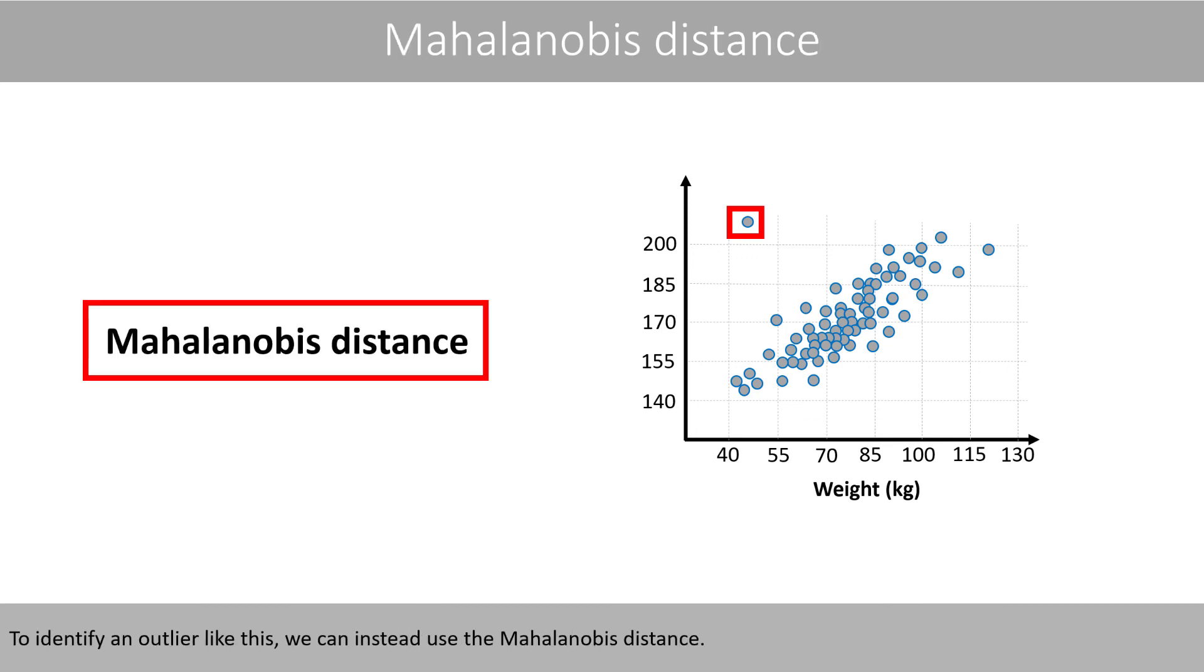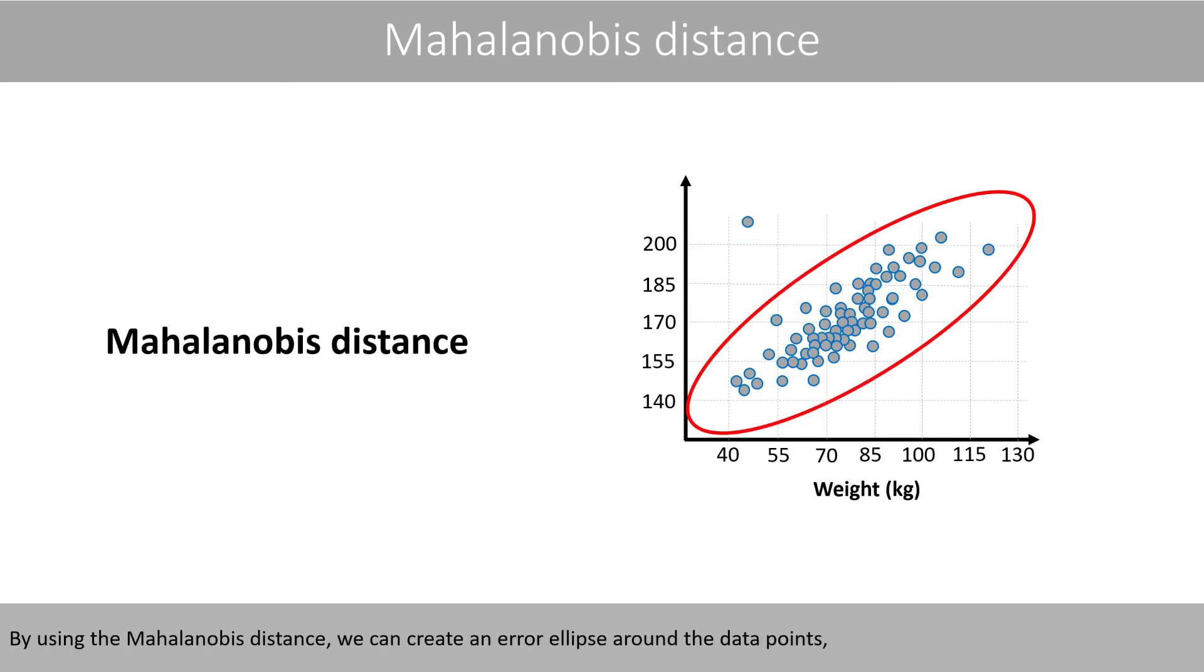To identify an outlier like this, we can instead use the Mahalanobis distance. By using the Mahalanobis distance, we can create an error ellipse around the data points, where data points outside such an ellipse can be classified as an outlier.